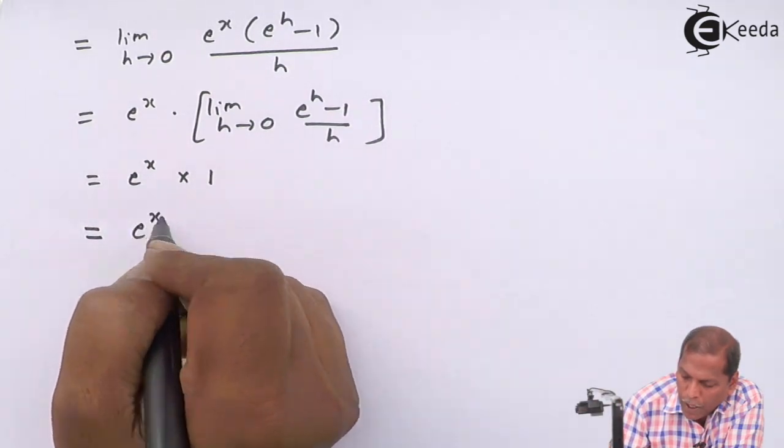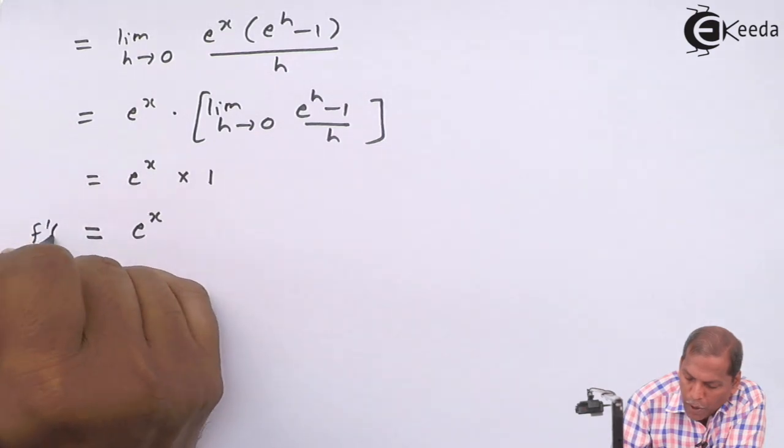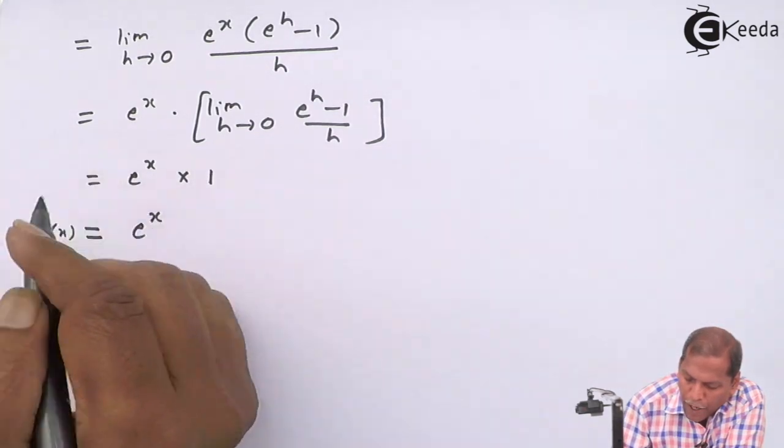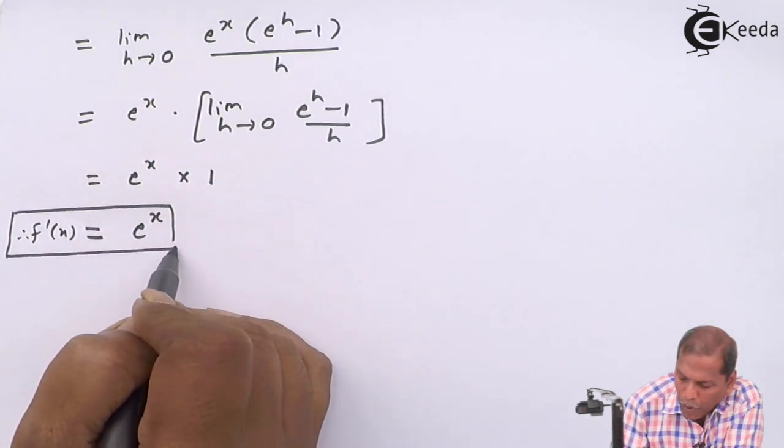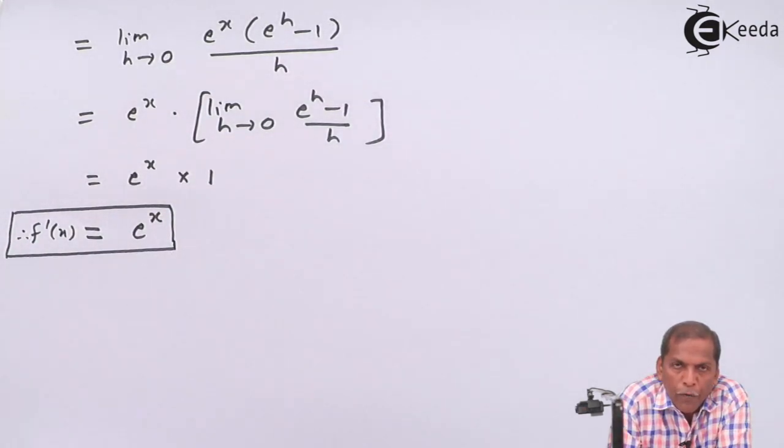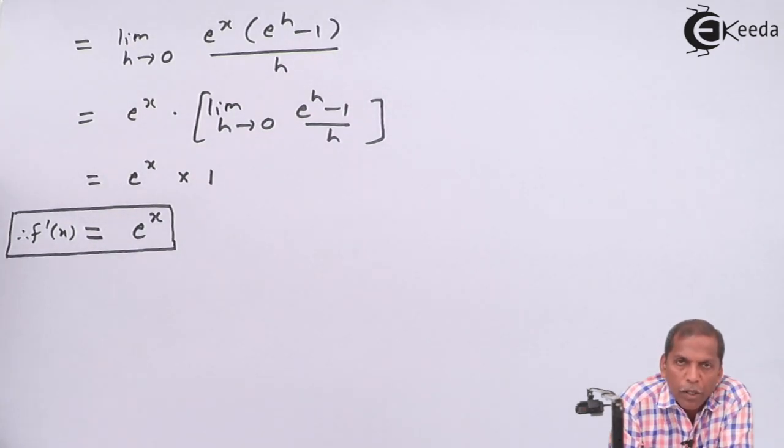We get e raise x. So in this way we proved f dash x is equal to e raise x. It means the derivative of e raise x is e raise x only. Thank you.